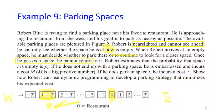If he passes space 1 and is already somewhere further along, he cannot go back to space 1 because it is closer to the restaurant. This is like a one-way street where you cannot turn back to a previously visited space. Robert estimates that the probability that space T is empty is P_t. If he does not end up with a parking space — meaning he reached the last space and it is occupied — he is embarrassed and incurs a cost of big M.